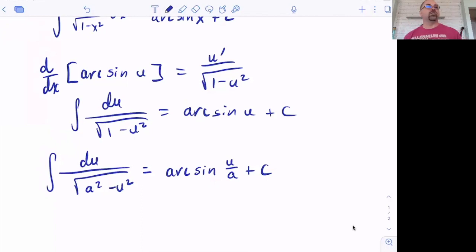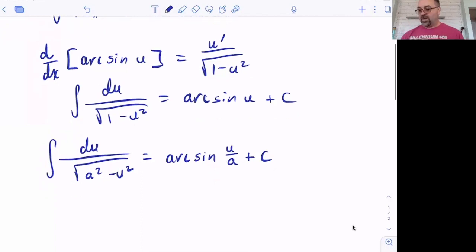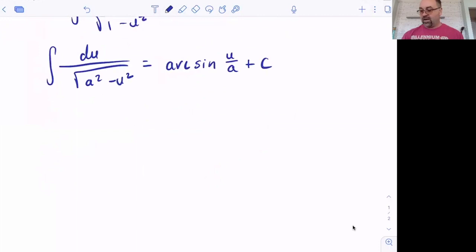Similarly, you can show that with a constant of a in there, if we have a squared plus u squared, now, which one of the inverse trig functions had a derivative that looks sort of like that? If you're thinking, hey, I remember what arc tan's derivative looked like, you would be exactly right. The difference is now we have arc tan of u over a here.